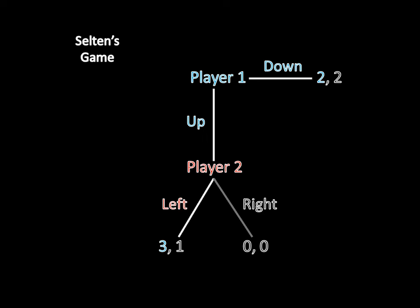Now player one can use this knowledge to his advantage. He knows that if he plays up, player two will play left. Anticipating this, he will definitely want to go in that direction. If he plays down, he'll only get two. But if he plays up, he knows player two will play left, which nets him three points.